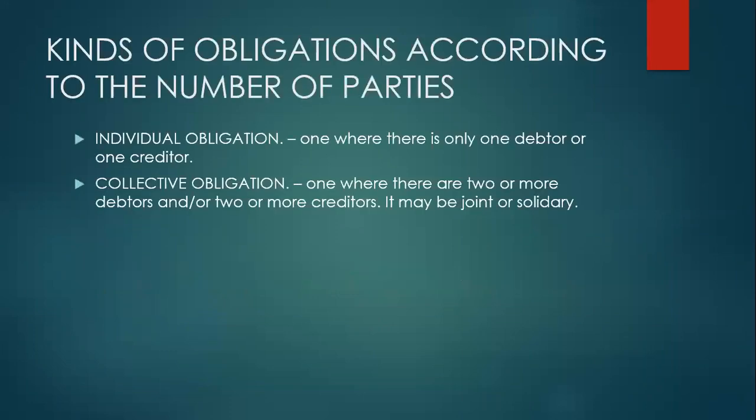Kinds of obligations according to the number of parties. We have individual obligation — one where there is only one debtor or one creditor. We have collective obligation — one where there are two or more debtors and/or two or more creditors. It may be joint or solidary.